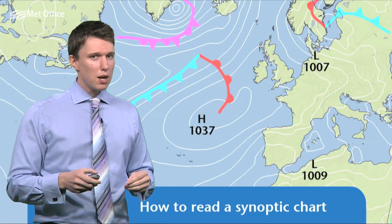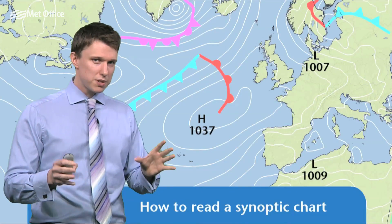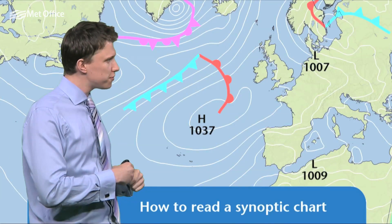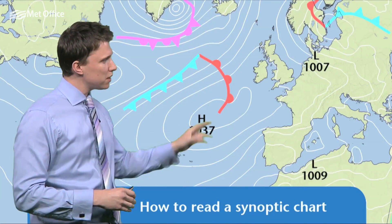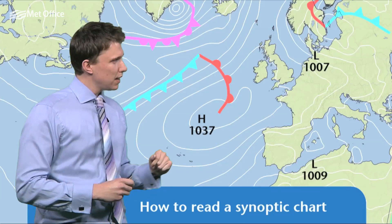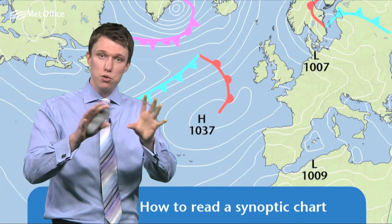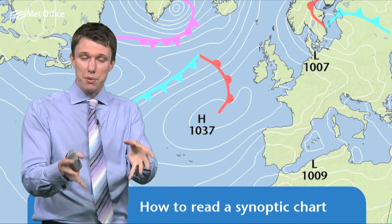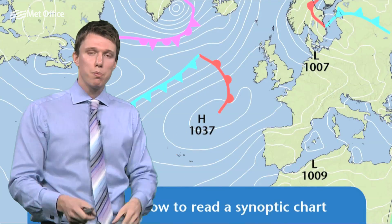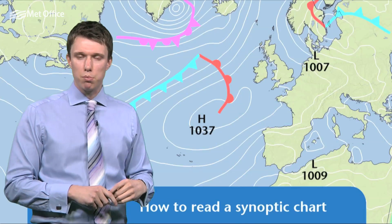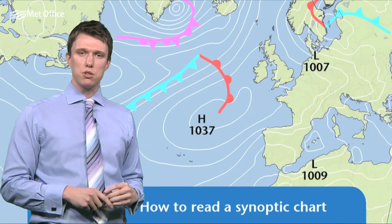In time, a cold front will tend to catch up with the warm front because it moves faster, and we end up with something called an occluded front. Those occlusions can form their own entities as well, and they're marked by a purple line with purple semicircles and purple triangles next to each other.